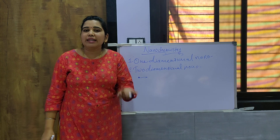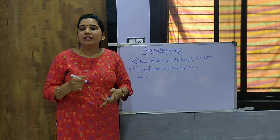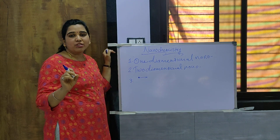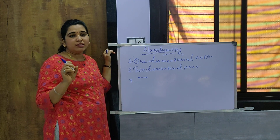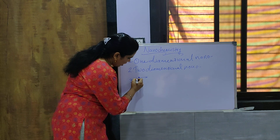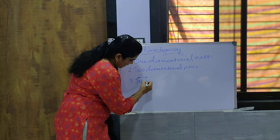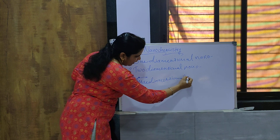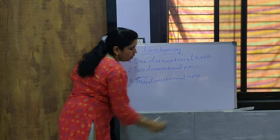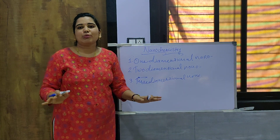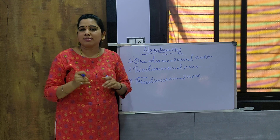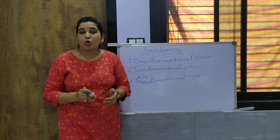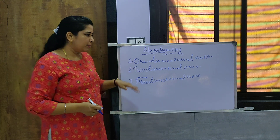The third type is three-dimensional nano materials, in which all three dimensions of the material are in the nanoscale. Examples of three-dimensional nano materials include quantum dots and colloids.